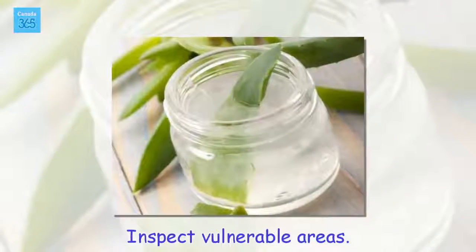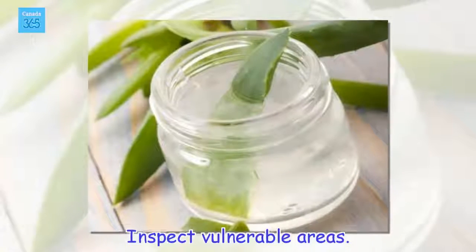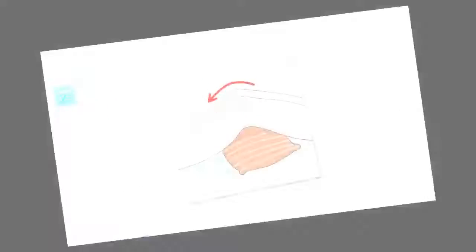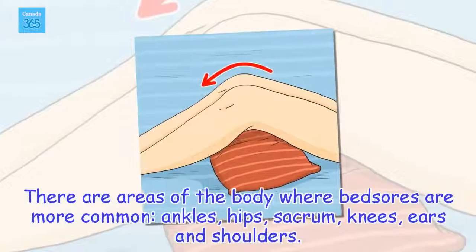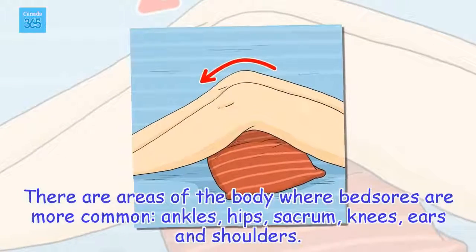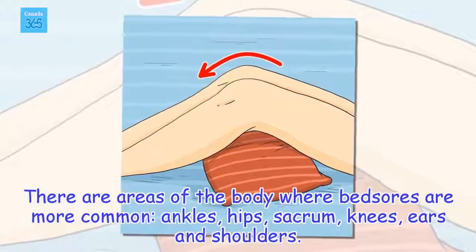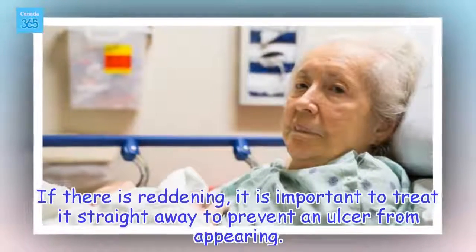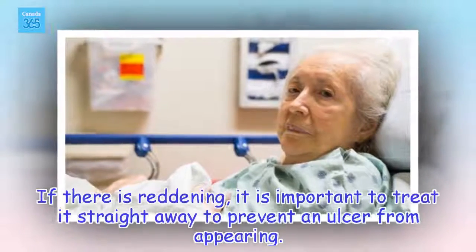Inspect vulnerable areas. There are areas of the body where bedsores are more common – ankles, hips, sacrum, knees, ears and shoulders. If there is reddening, it is important to treat it straight away to prevent an ulcer from appearing.